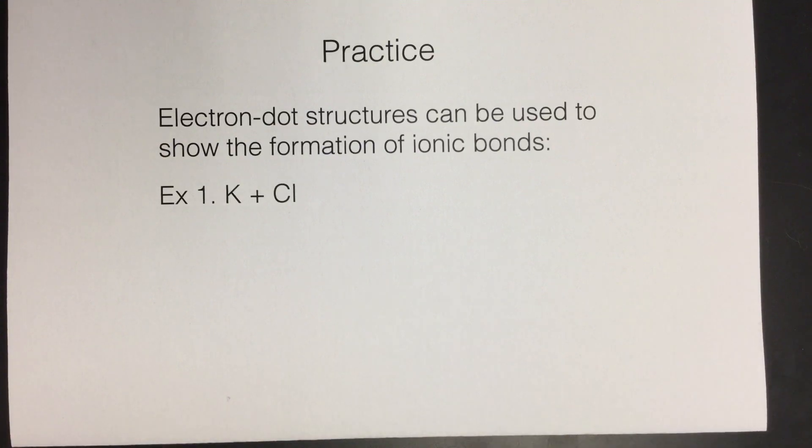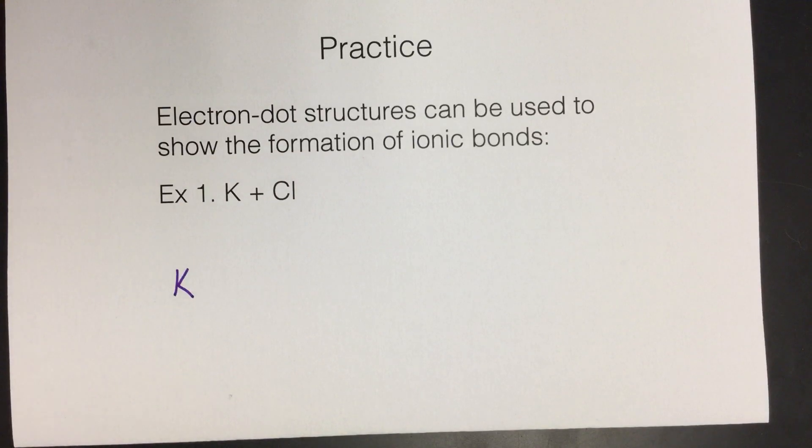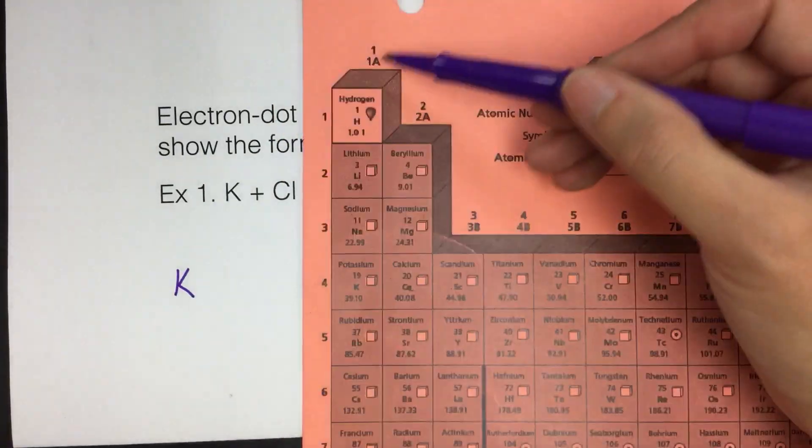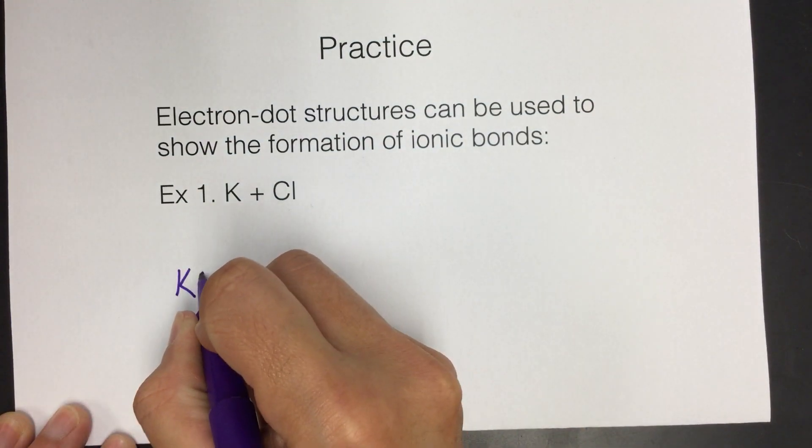There's a few things that go into that. We've done this before, but I'm going to draw first potassium, so I'm going to put a K here. To do dot structures, you need to know how many valence electrons these things have. If I look on the periodic table and find potassium, it's in group 1A, so it has one valence electron. I'll show that by putting a dot here.